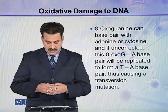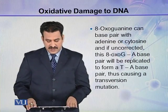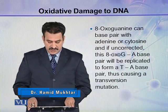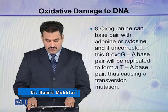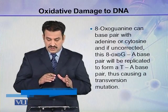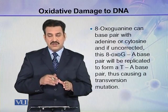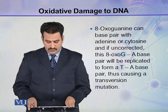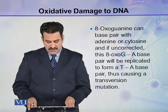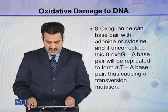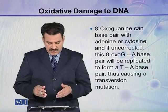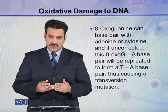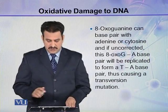8-oxoguanine can base pair with adenine or cytosine. If uncorrected, the 8-oxo-G–A base pair will be replicated to form a T-A base pair, thus causing a transversion mutation because G is replaced by T.